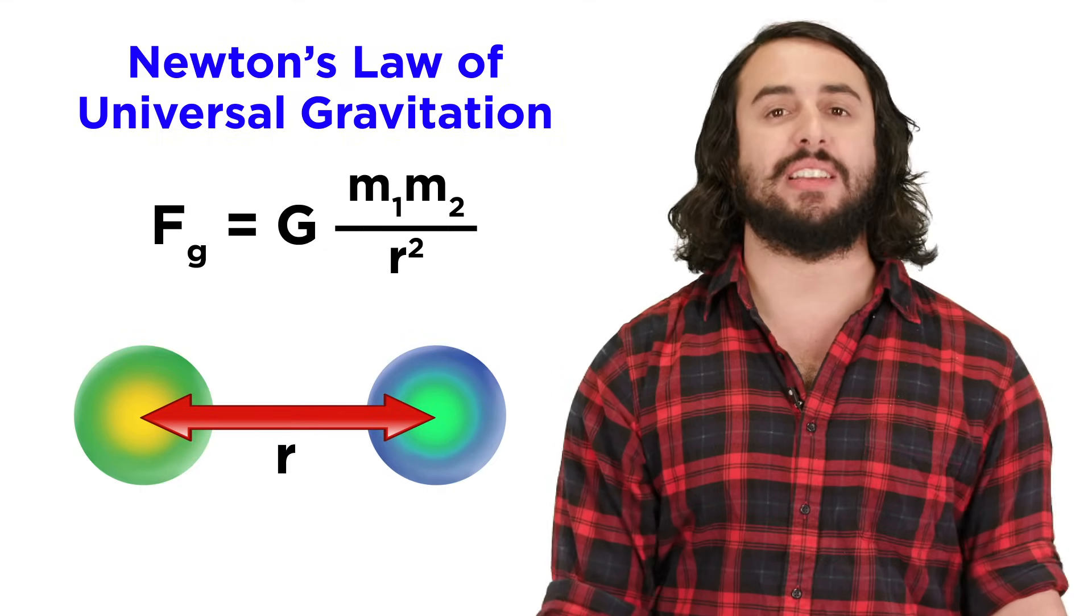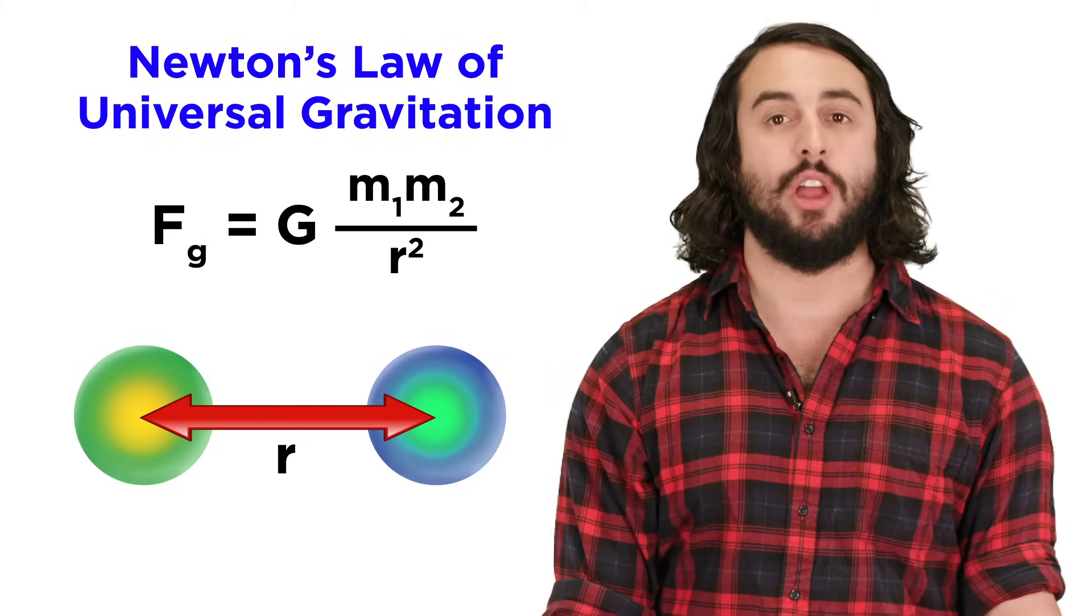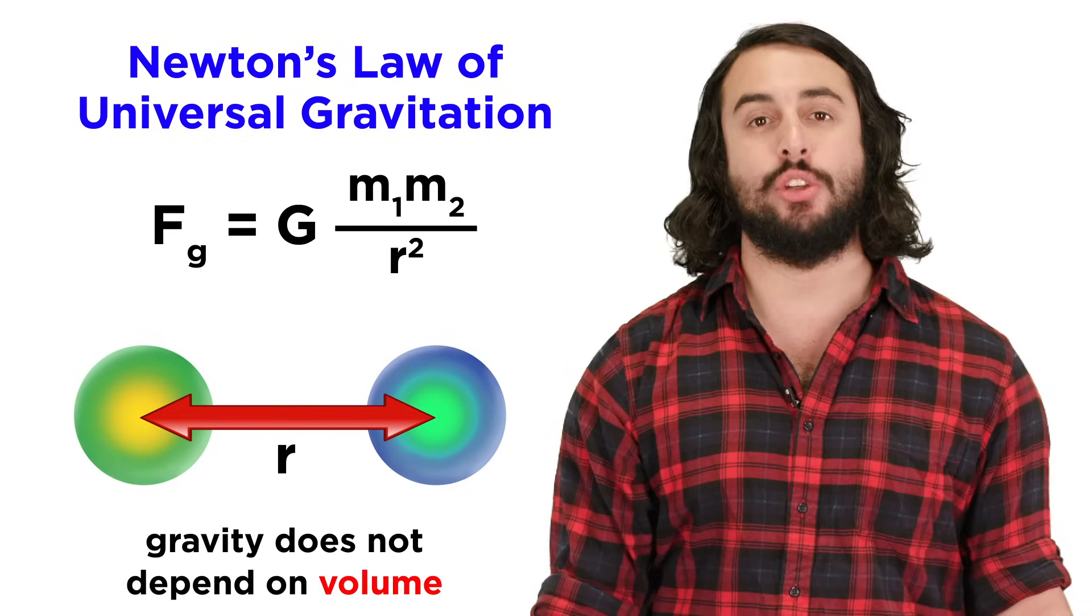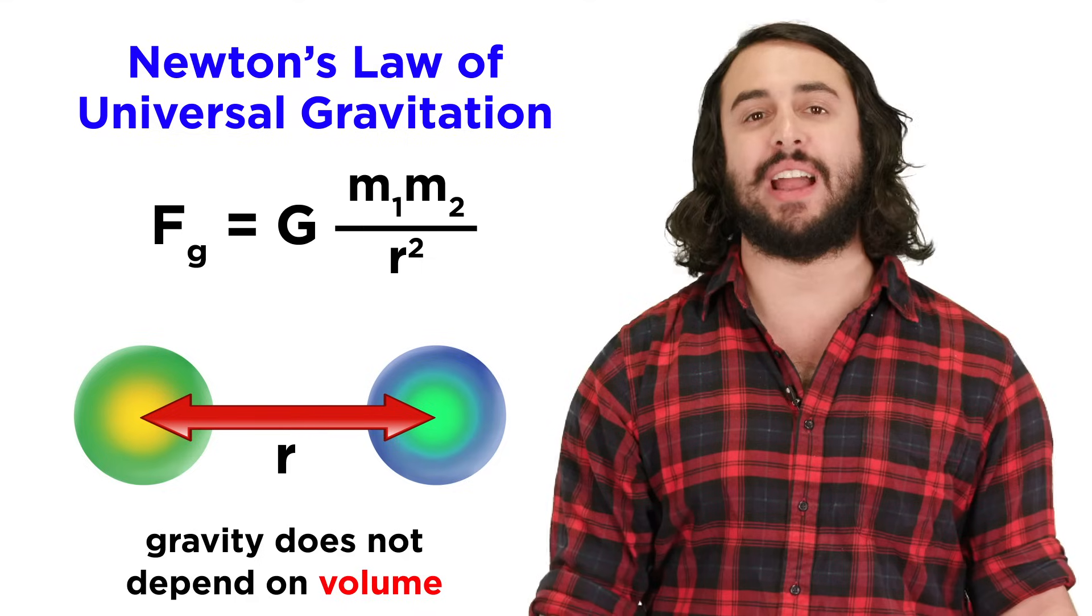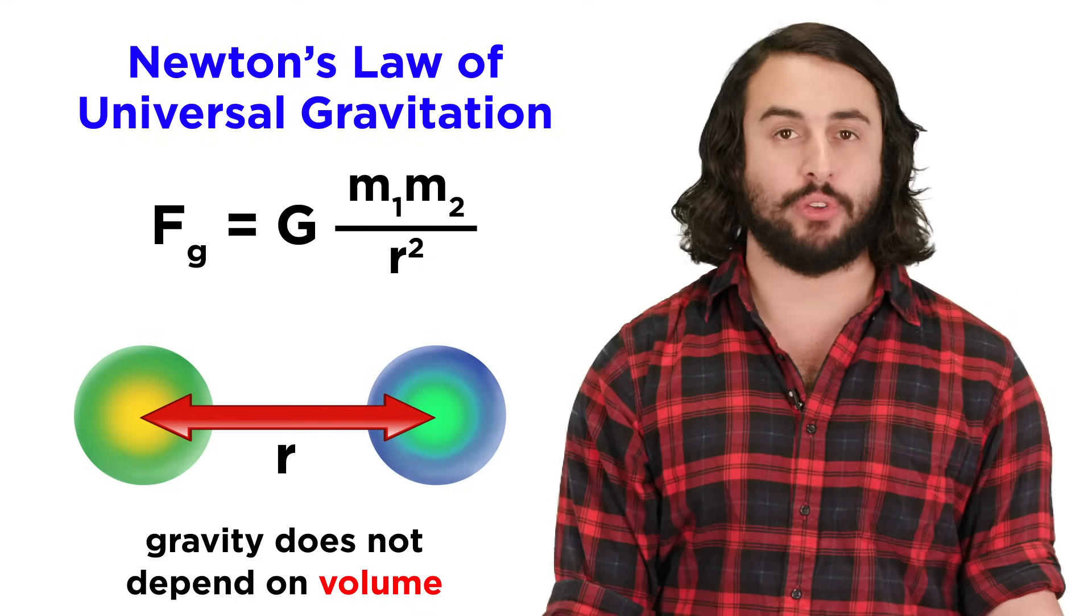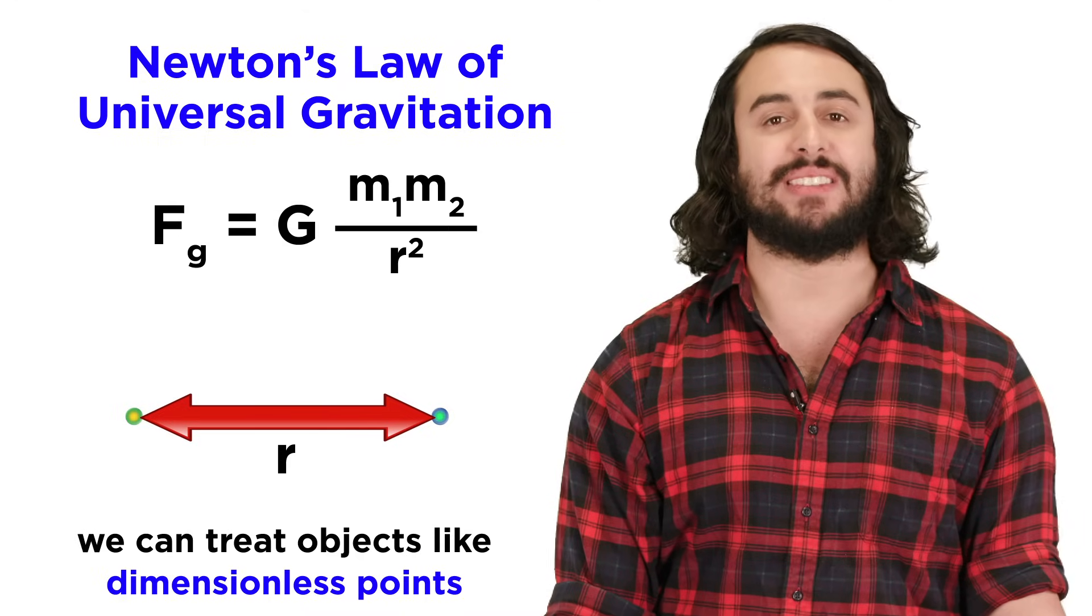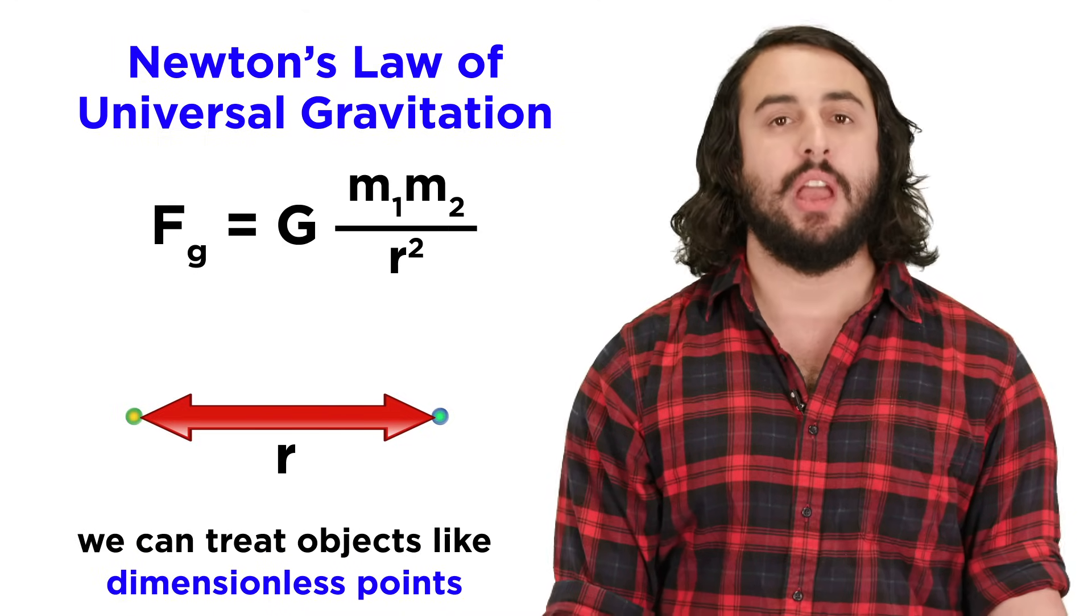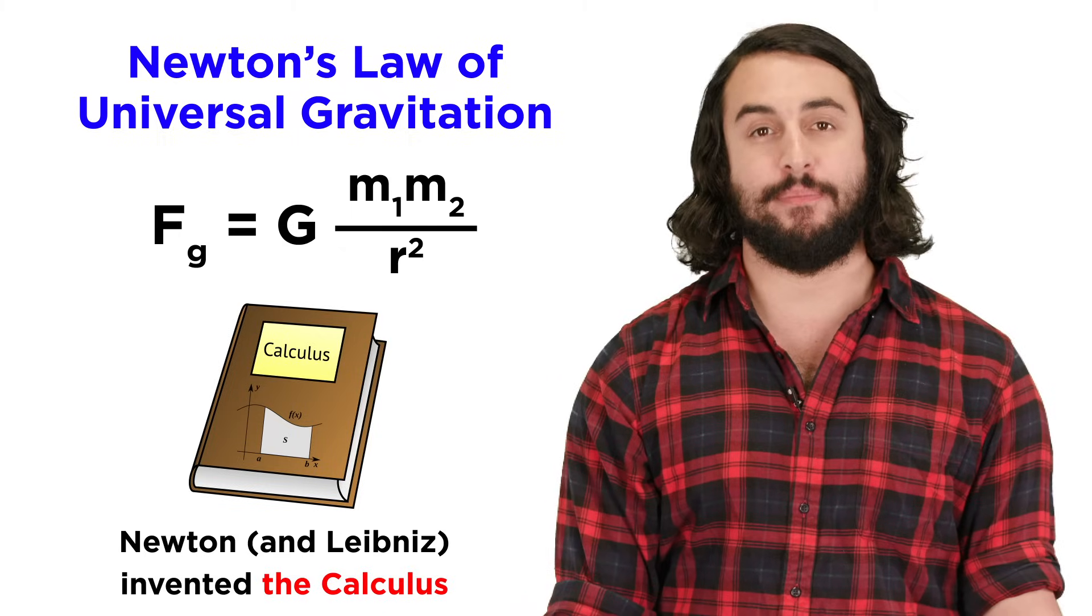When discussing the radius between two objects, we will take the distance between their centers rather than their surfaces, as Newton showed that the gravitational force exerted by an object depends only on its mass and not on its volume, meaning that when discussing gravity we can treat everything as a point-like mass. He had to invent the calculus to do so, much to the dismay of math students everywhere.